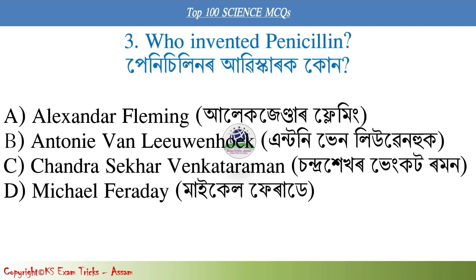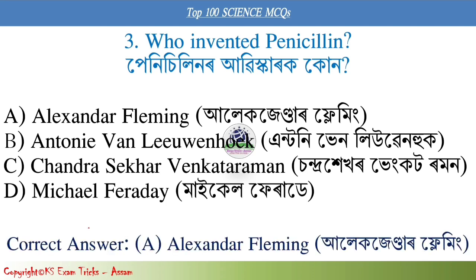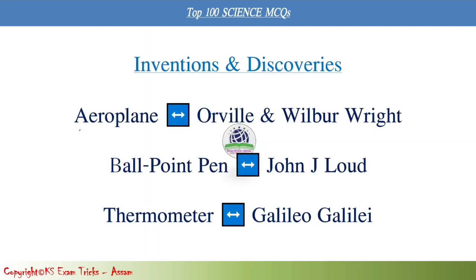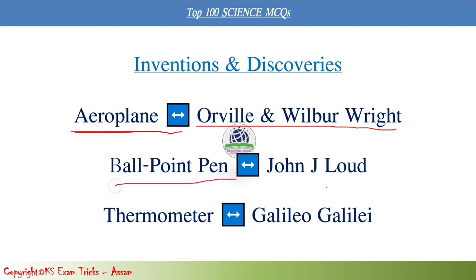The correct answer is Alexander Fleming. The aeroplane was invented by Orville and Wilbur Wright. The ballpoint pen, John's Law, and the thermometer was Galileo.